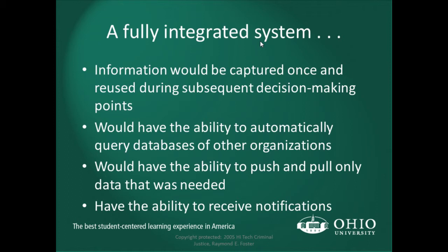Information would be captured once and reused during subsequent decision-making points. The system would have the ability to automatically query databases of other organizations. Crime does not follow jurisdictional boundaries — just because our city or county limit ends at a line doesn't mean someone won't commit a similar crime a couple miles away. Being able to query surrounding databases — asking whether someone is committing a certain type of crime with a certain MO — and receive notifications when a neighboring jurisdiction's activity meets a set parameter, is critically important.